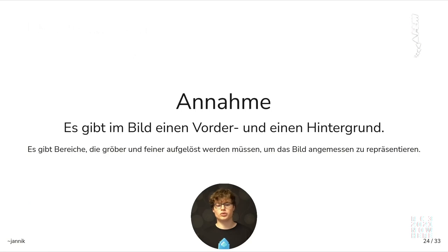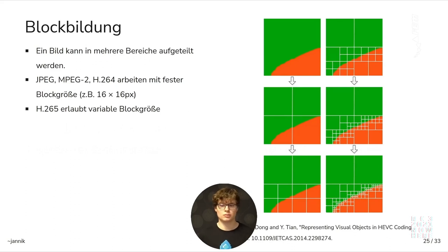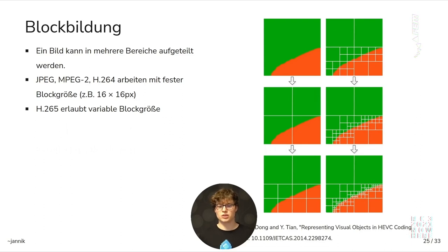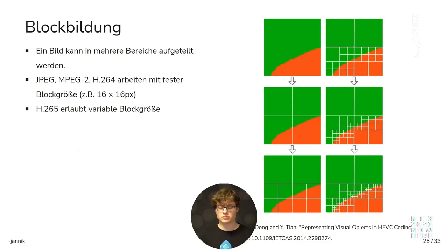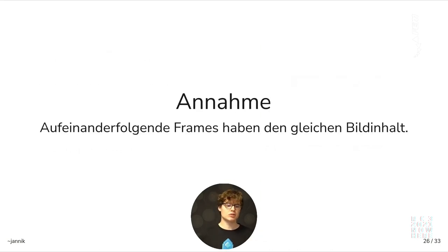The next assumption is that the image has a foreground and a background, meaning there are areas which have rougher and finer resolution. There's a mode called creating blocks where you split the image into several blocks. JPEG, MPEG, and H.264 have a fixed block size, while H.265 has a variable block size as you can see on the right. Blocks are made smaller until they don't contain much structure anymore, so resolution reduces more along edges than everywhere else. I would like to say something about the cosine transformation but it doesn't fit into these 20 minutes.